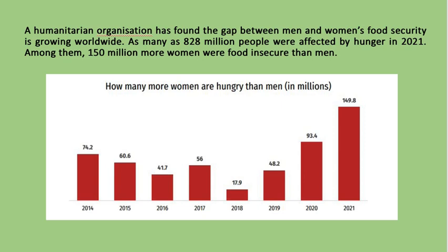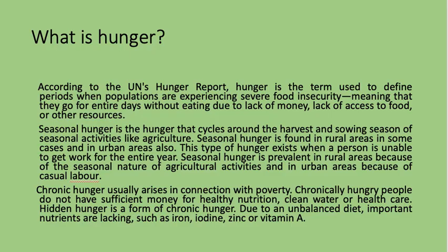This graph shows how many more women are hungry than men. A humanitarian organization found that the gap between men's and women's food security is growing worldwide. As many as 828 million people were affected by hunger in 2021, and among them, 150 million more women were food insecure than men.